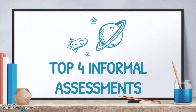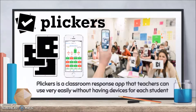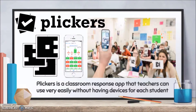That brings us to the top four informal assessments that I use technology with in my classroom. The first one is Plickers. Plickers is an awesome way to assess a student's knowledge instantaneously and gather formative assessment feedback instantly, and without technology for each student — there's only one device needed, and that's the teacher's. I'll use my phone and stand up at the front of the class. All my students will have these little Plickers cards that they hold up, and I get instant feedback on my phone. This is a great tool, especially if you're not one-to-one with devices or have limited devices. Plickers is a classroom response app I use probably two or three times a week to gather instantaneous data.